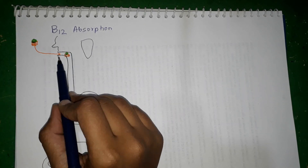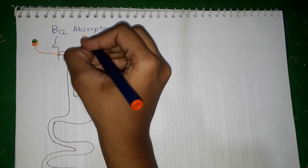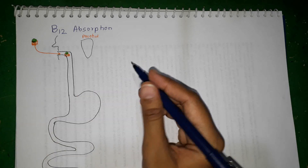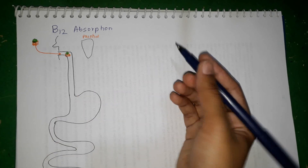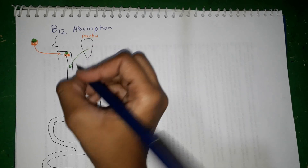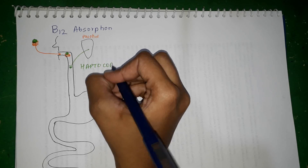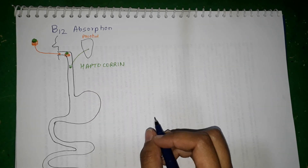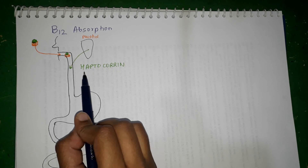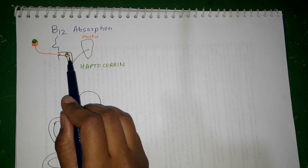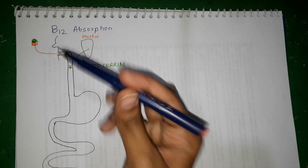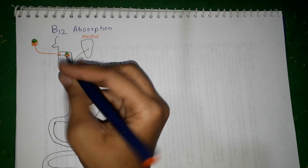Vitamin B12 absorption — the whole mechanism — starts in the mouth itself. The parotid glands, which contribute the major portion of the salivary secretions, secrete one form of protein in the mouth called haptocorin. This haptocorin is a vitamin B12 binder found in the salivary glands. However, vitamin B12 does not bind to haptocorin immediately in the mouth because it's already bound to a protein binder from the diet. So through the esophagus, the complex of vitamin B12 with its dietary binder and haptocorin enter separately into the stomach.